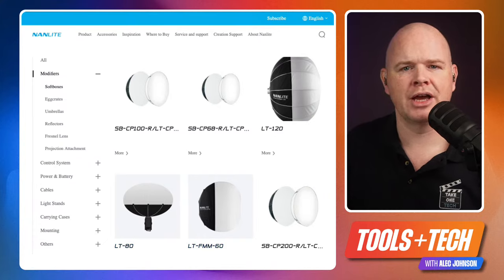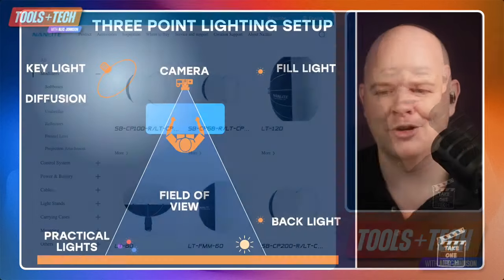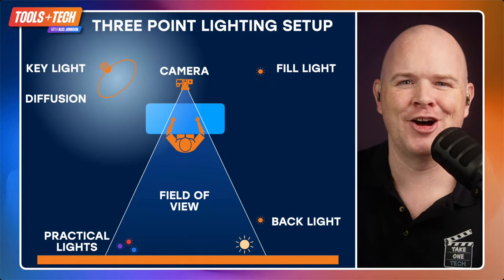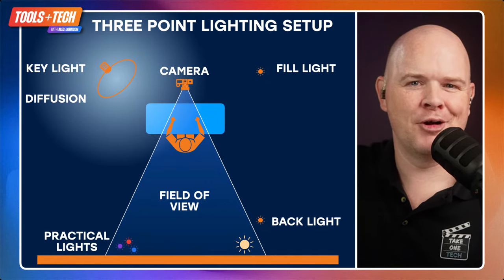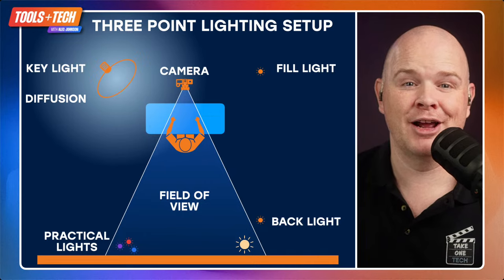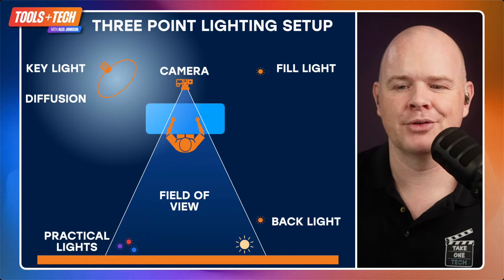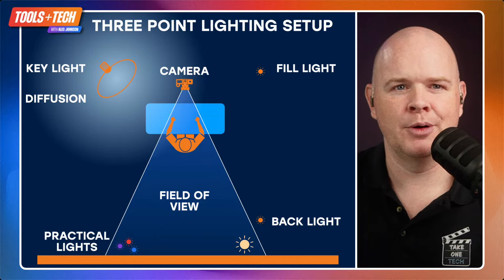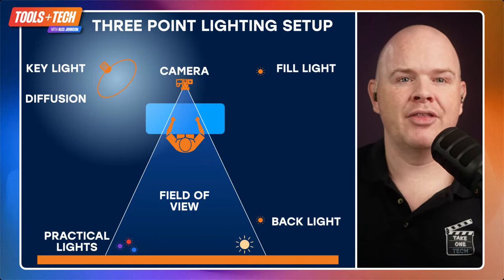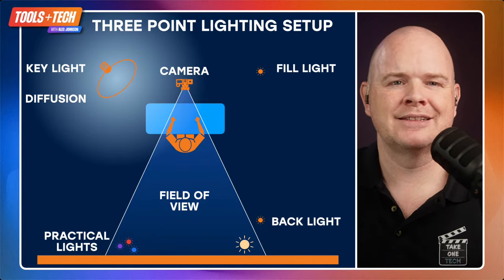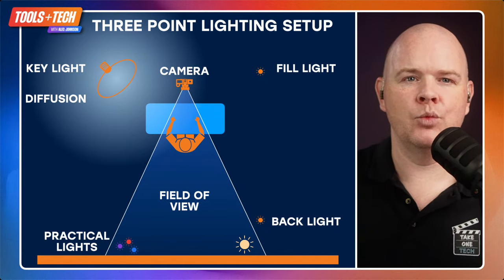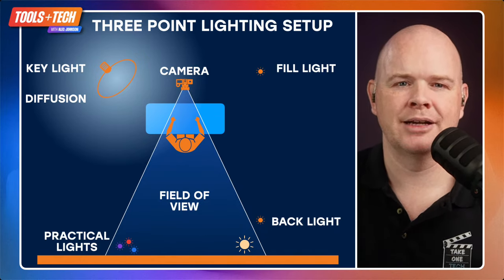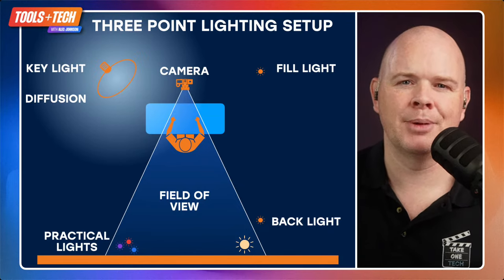I forgot to mention the back light. The point of the back light is to give a little more separation from the background. But even with lantern-style lights, they're still pretty much spilling light everywhere and would fill the room with light. With the colored practical lights behind my acoustic panels, if I had really powerful light sources spilling out everywhere, it would dilute those colored lights behind me.